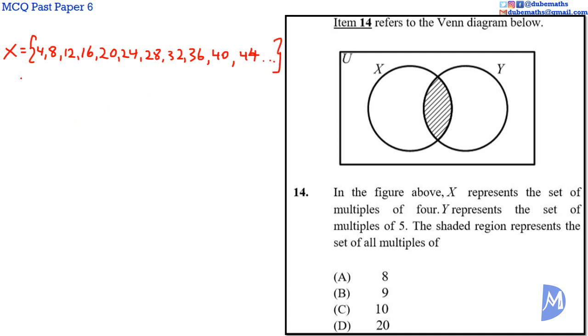Y, the set of multiples of 5, is equal to 5, 10, 15, 20, 25, 30, 35, 40, 45, and so on. The shaded region represents X intersect Y.